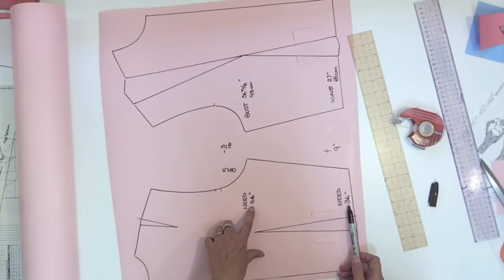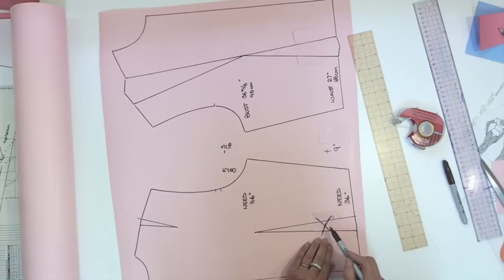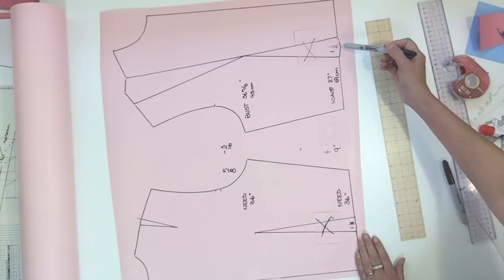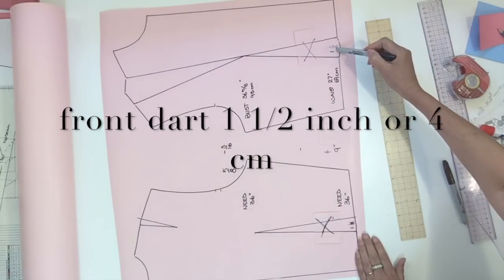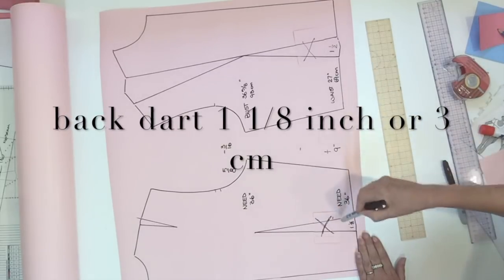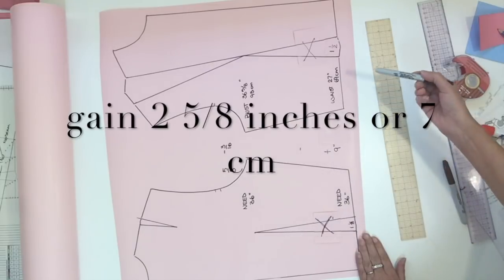Now look at the person measurement. She has the waist the same size as the bust so for sure the person is not going to need darts to adjust the waist in the front or in the back. So I measure my dart one inch and a half and one inch and one eighth. On half a garment I gain two inches and five eighths.